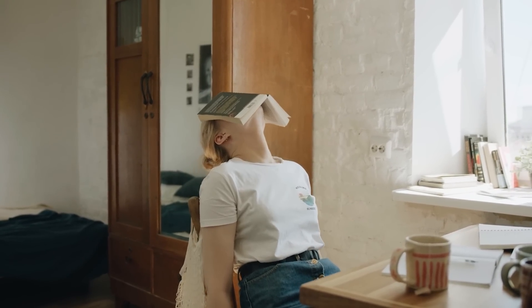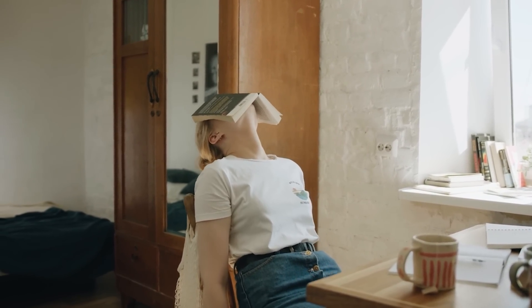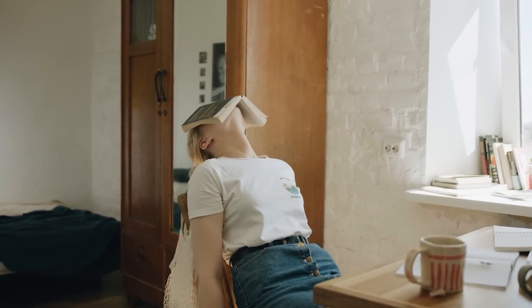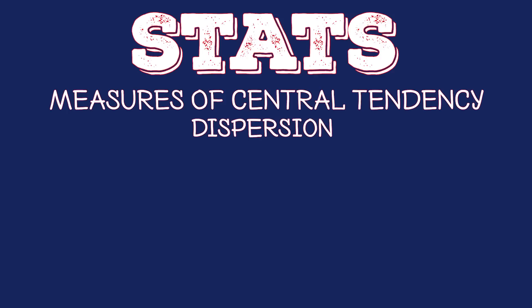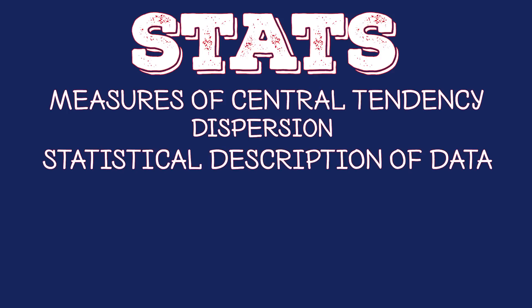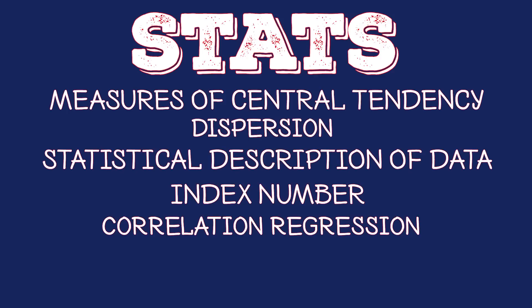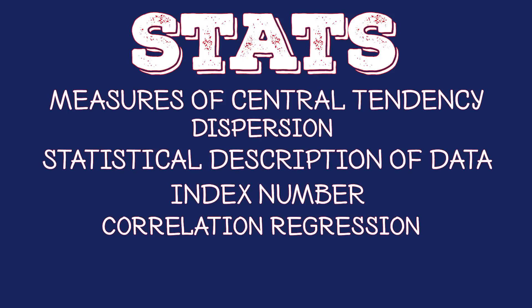This is a very simple thing: if you have a low confidence level in Mass States LR, you focus on limited chapters. On stats — measure of central tendency, dispersion, statistical description of data, index number, correlation, regression, probability, and theoretical distribution — for those children who don't have confidence.